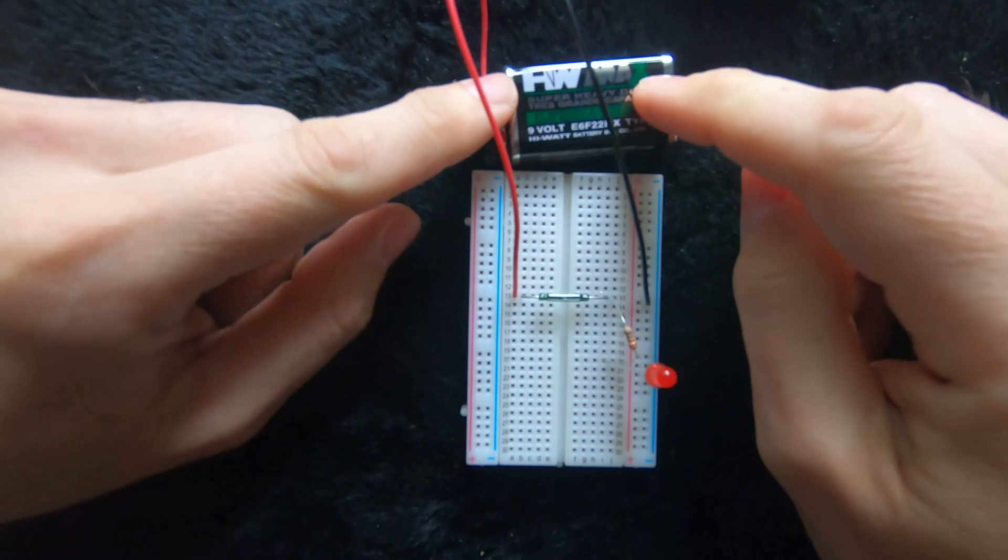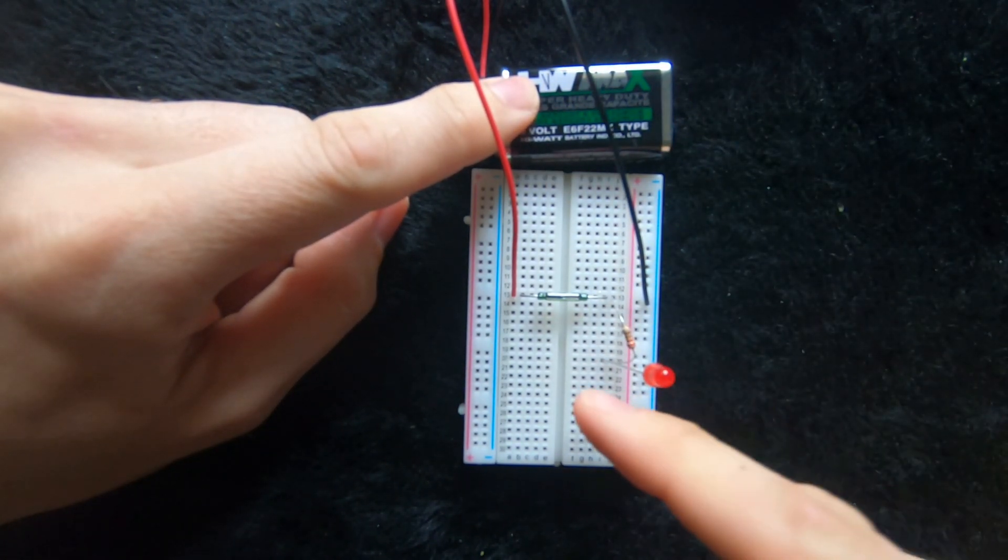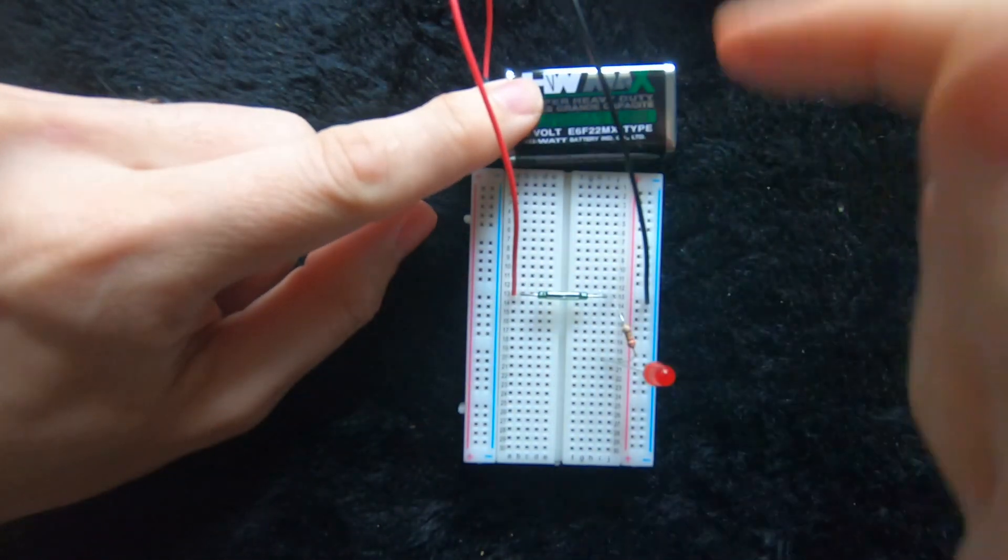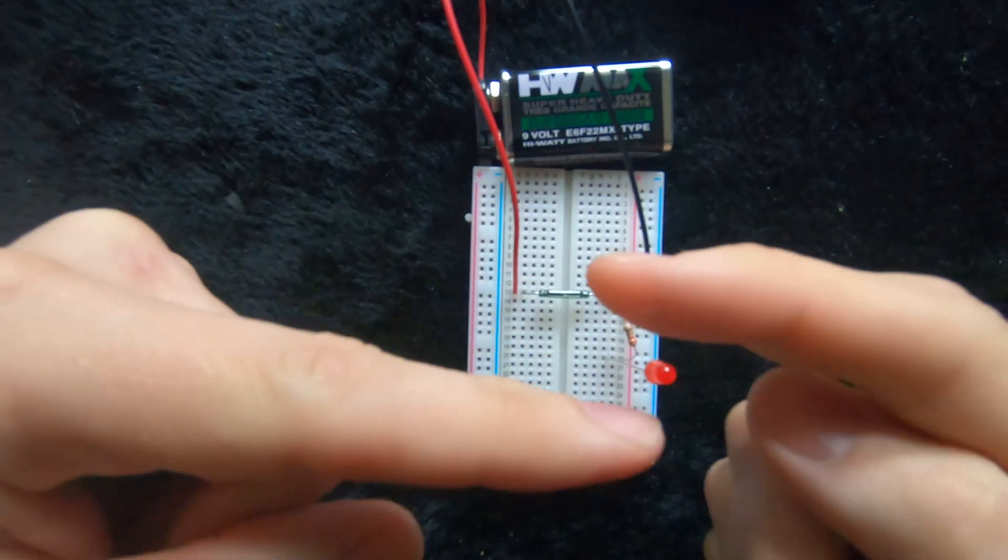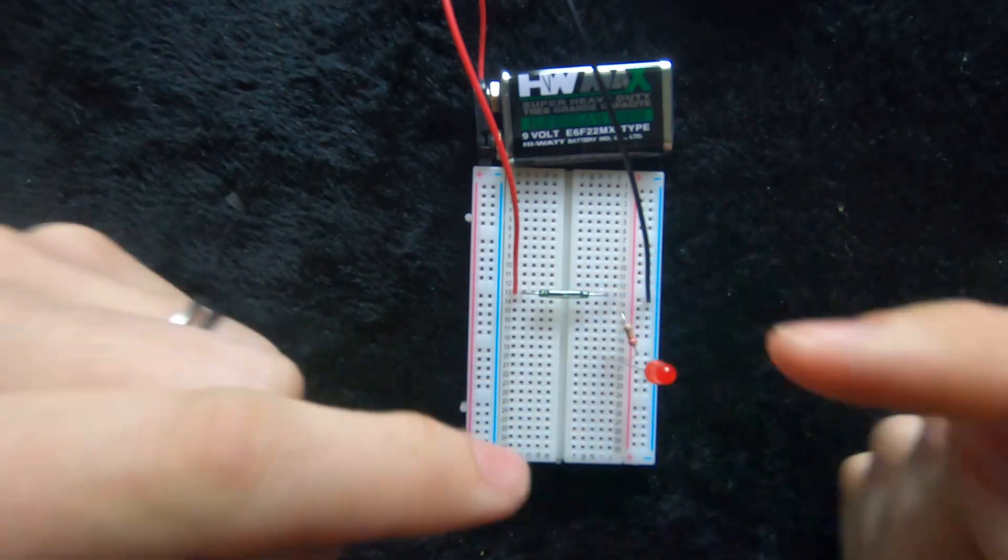So what we've got is PP3 battery, negative line here coming down the power rail, through the LED, through the resistor, through the reed switch and back to the positive. Now it's not doing anything at the moment because these two reeds are separated. There's a huge resistance between those two reeds so nothing's happening.